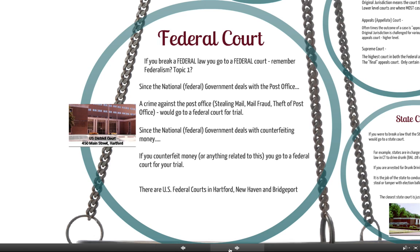Since the national government deals with the post office — it was on the left side of the Venn diagram — a crime against the post office, something like stealing mail, pretending to be somebody you aren't in the mail, or theft of the post office like physically breaking in, would go to a federal court, since mail is a federal job.